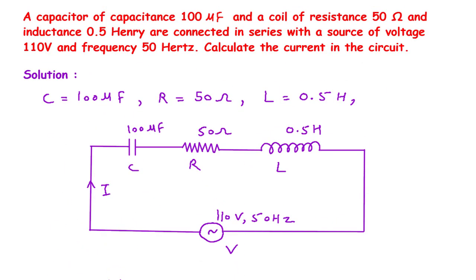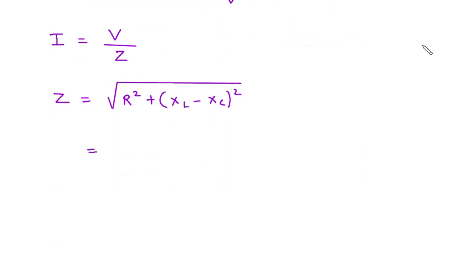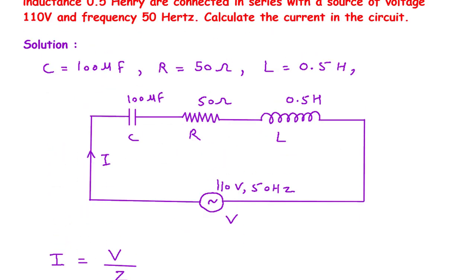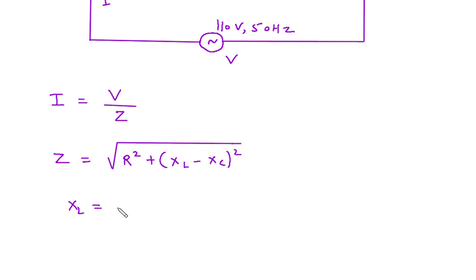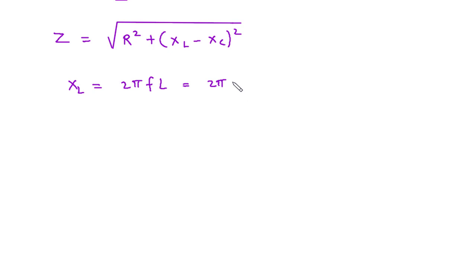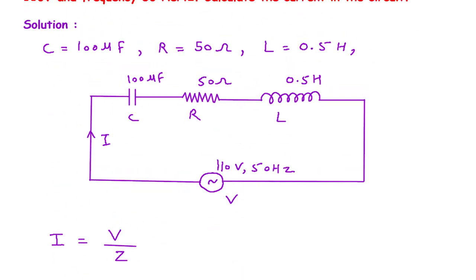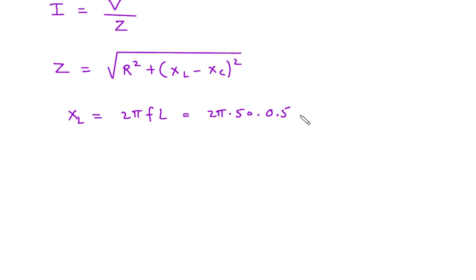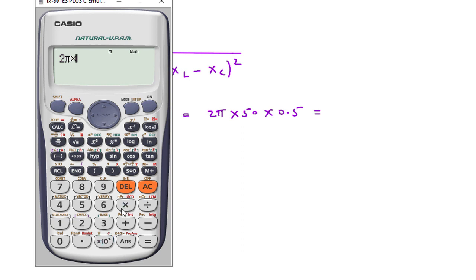The value of resistance is 50 ohm. We don't have the value of XL and Xc, so first we find XL. XL = 2πfL = 2π × 50 × 0.5 = 157.07 ohm.